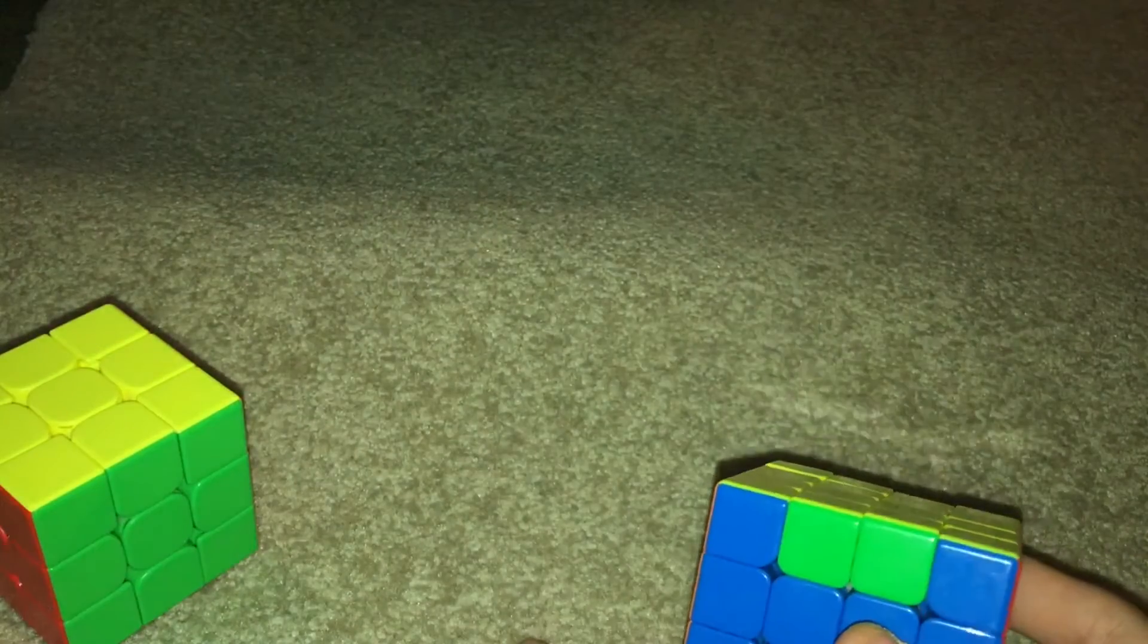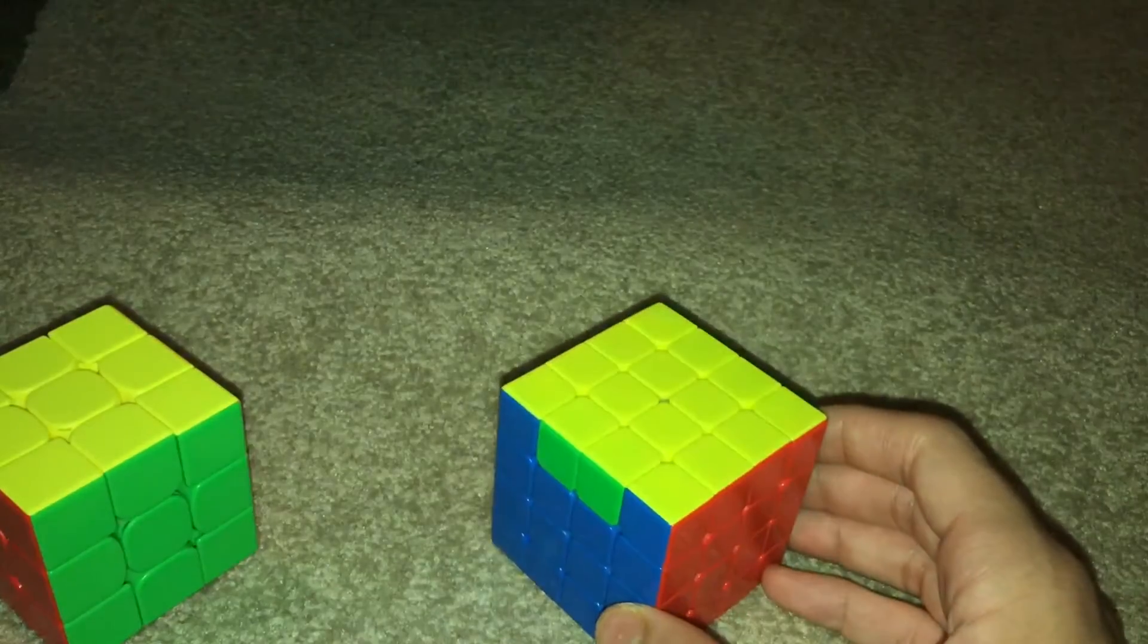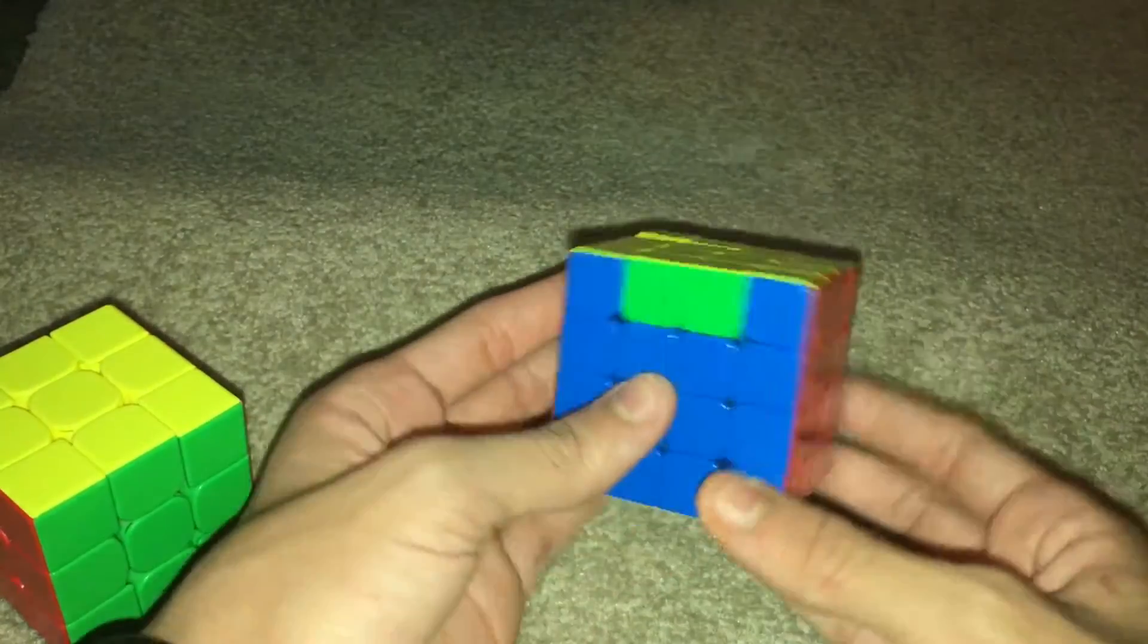you will always know if you have PLL Parity when you don't recognize the OLL case or when you have these two swapping. So it goes like this.